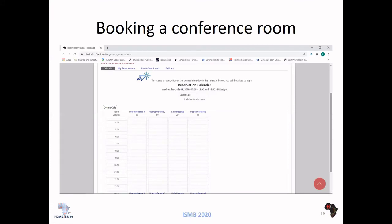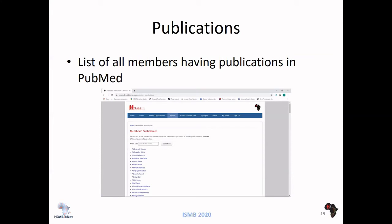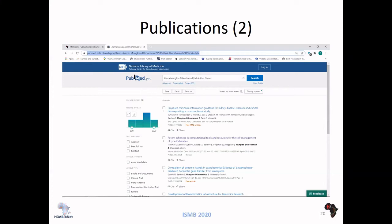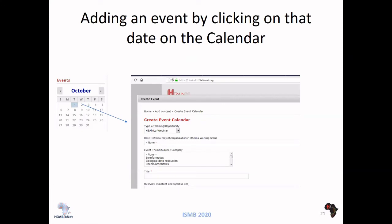We can also look at publications of members, which is publicly available. When you click on publications, you get a list of all members, and clicking on one takes you to the PubMed website showing statistics about their publications. For registered users, clicking on the calendar lets you create any event — a conference, a webinar, or a training — and use that interface to share events with all members of the consortium so they can apply online.